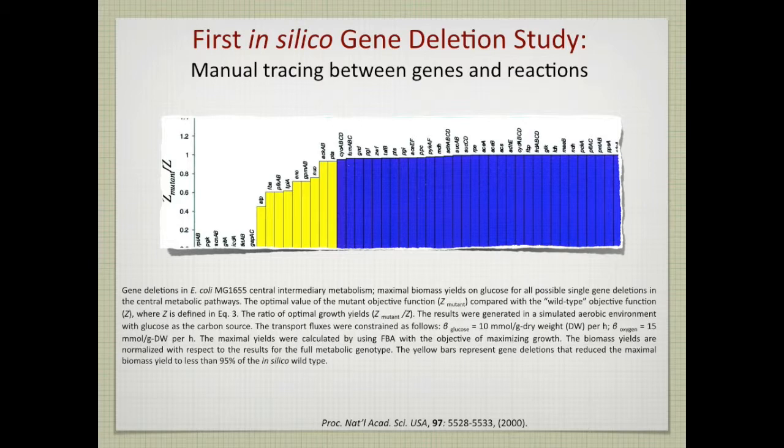So the first calculation of this sort came out in the year 2000 with the first genome scale model of E. coli. And there are the results. We have the lethal genes, essential genes, lined up. And then in yellow are the genes that are predicted to give a phenotype of reduced growth rate. And then all these blue columns that corresponds to genes that are not predicted to affect the growth materially.